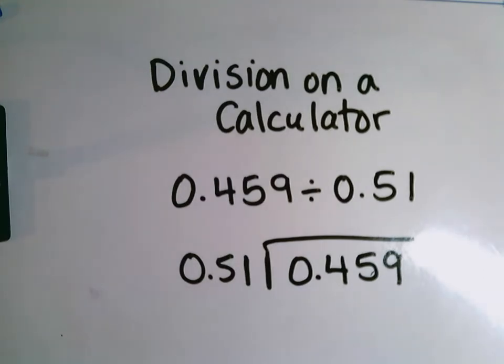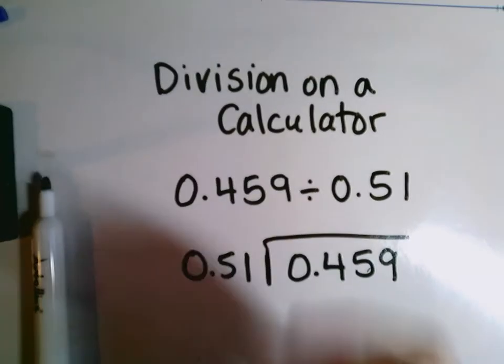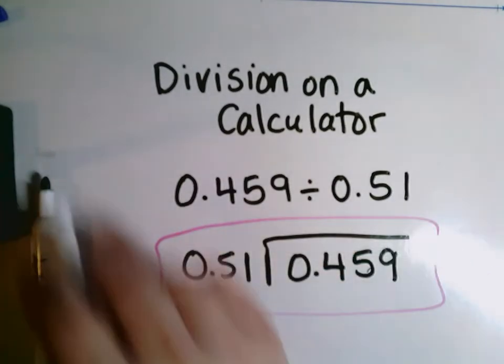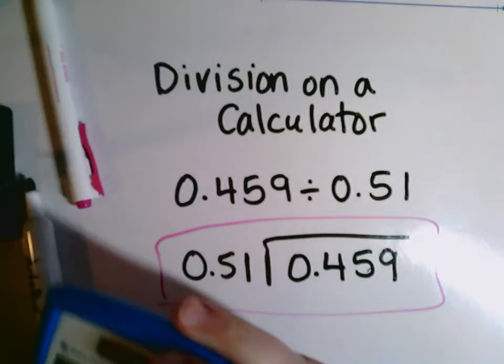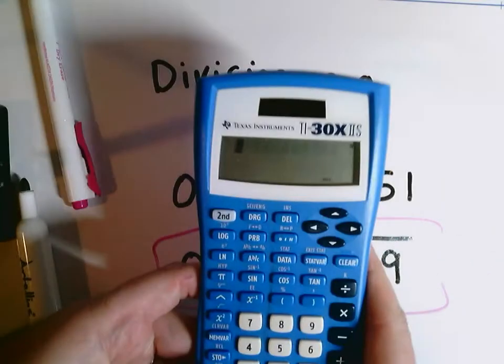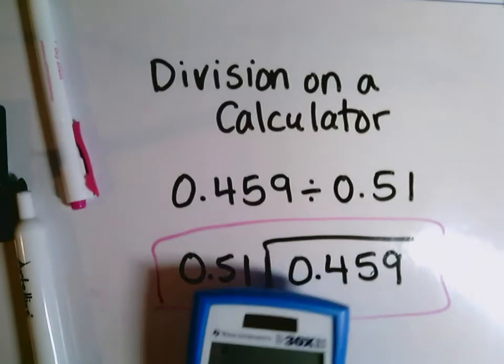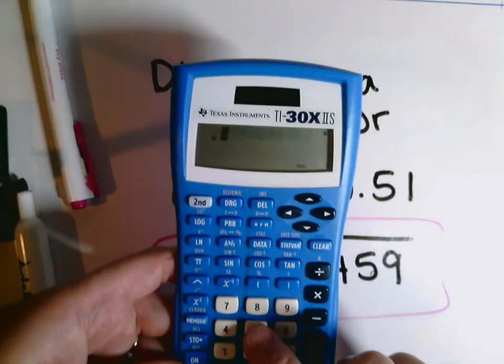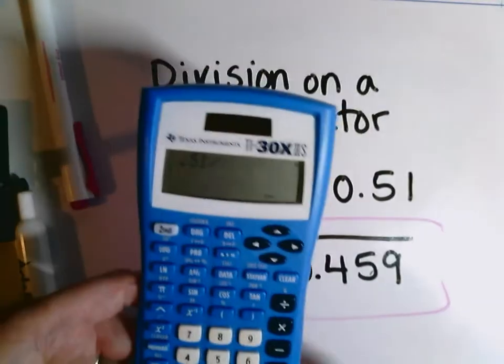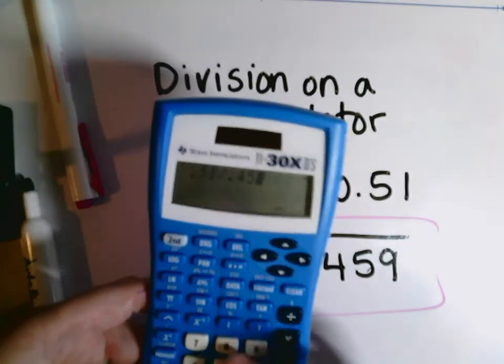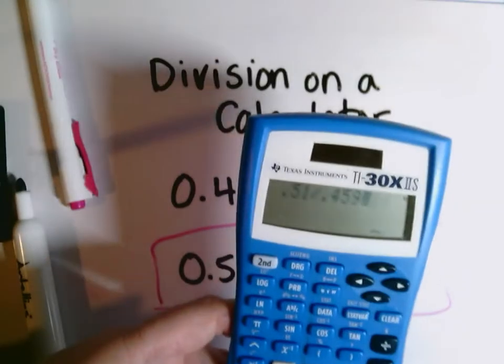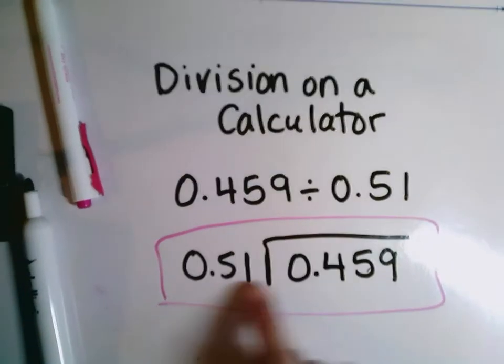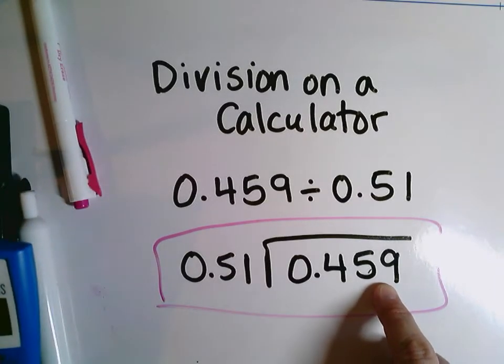What some students do often is when they see a problem written like this, when they enter it into their calculator they enter it as 51 hundredths divided by 459 thousandths. They would have put it in this way, starting here and moving across. However, that is not the problem that we're doing.